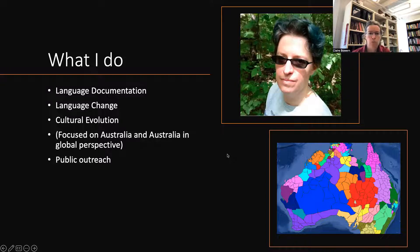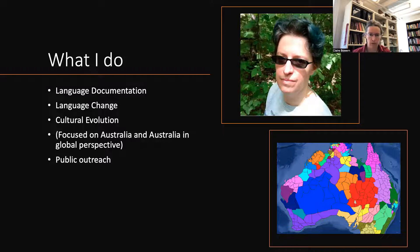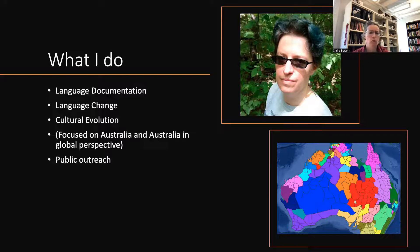A question I often get is what sorts of things do I work on? In general, my research group does work on language documentation, language change, and cultural evolution. We work with language users, particularly speakers of Indigenous Australian languages, but I also supervise students who work in other areas of the world. We figure out stuff about the structures of languages around the world and how they change over time. I take a pretty broad view, so we also do work in cultural evolution and phylogenetics.